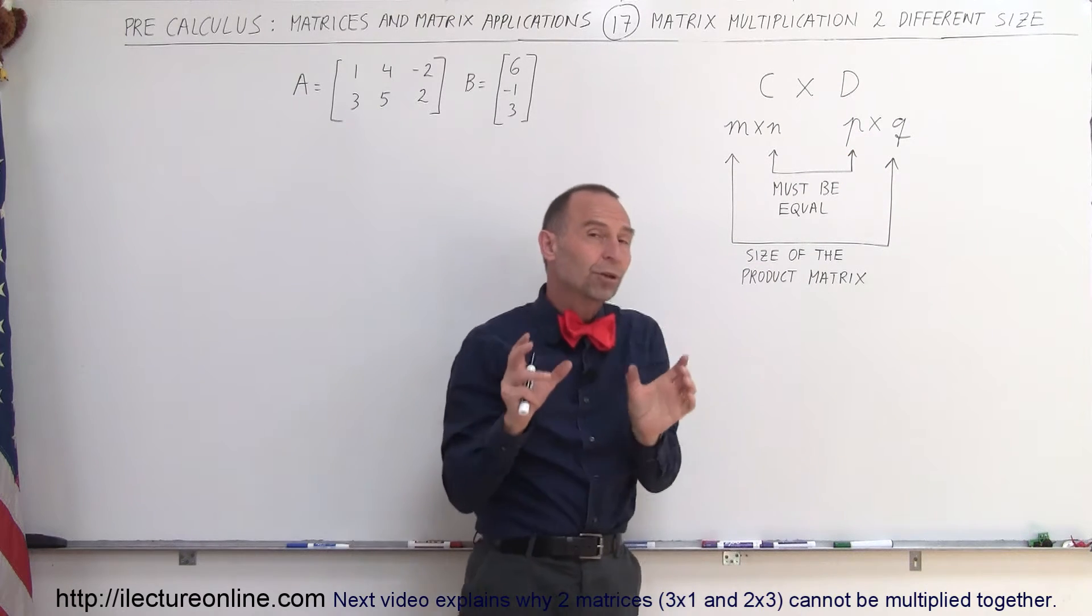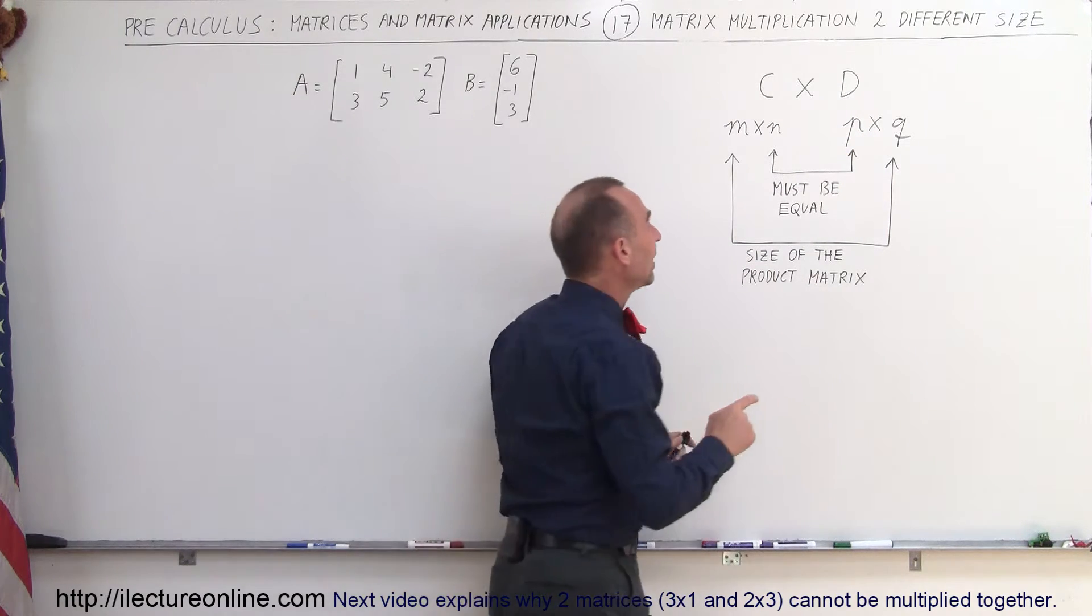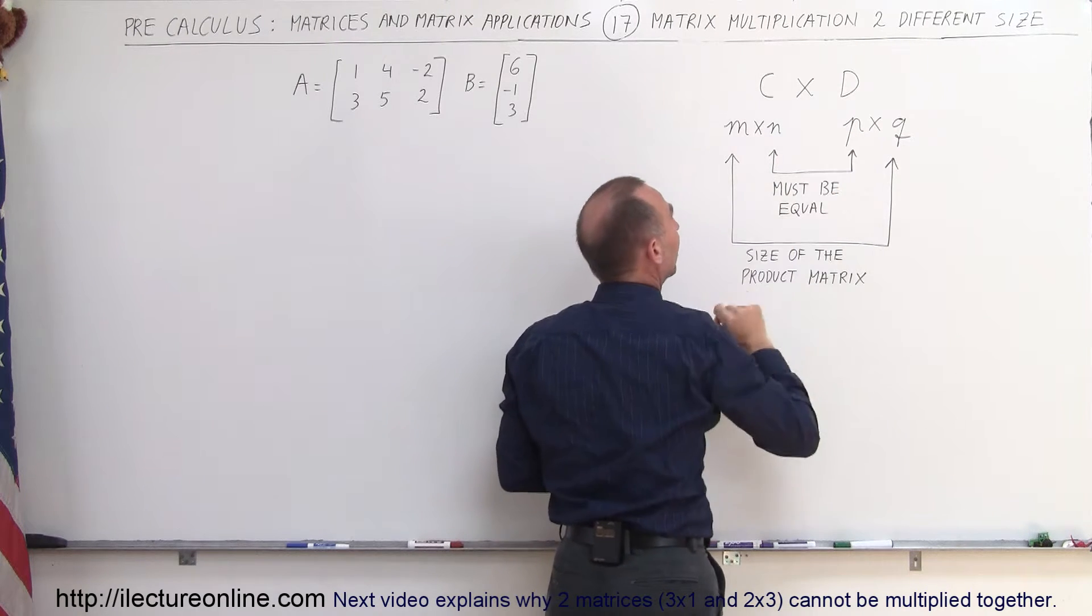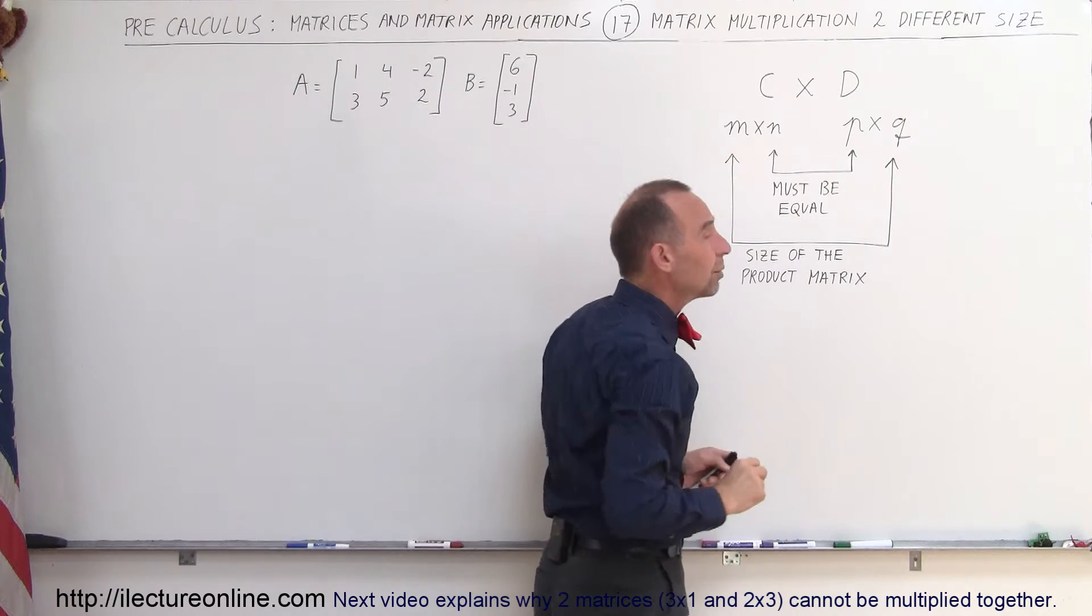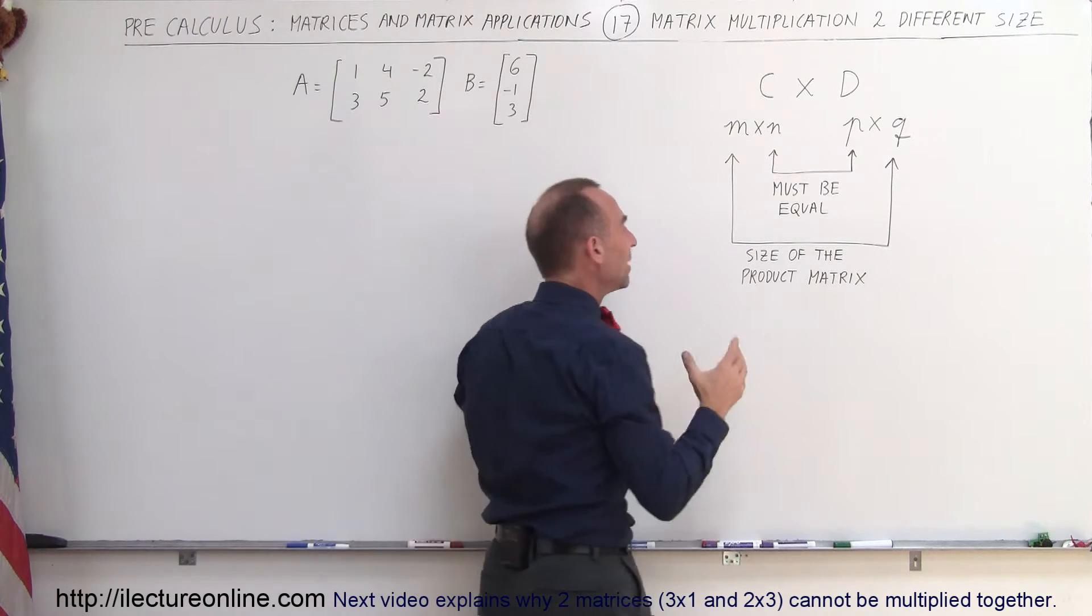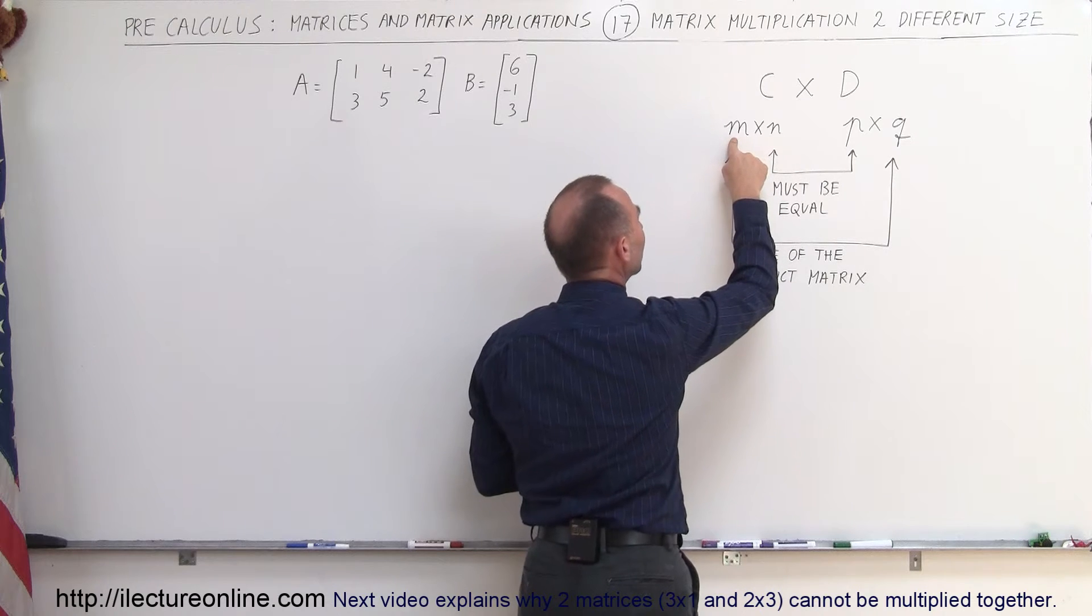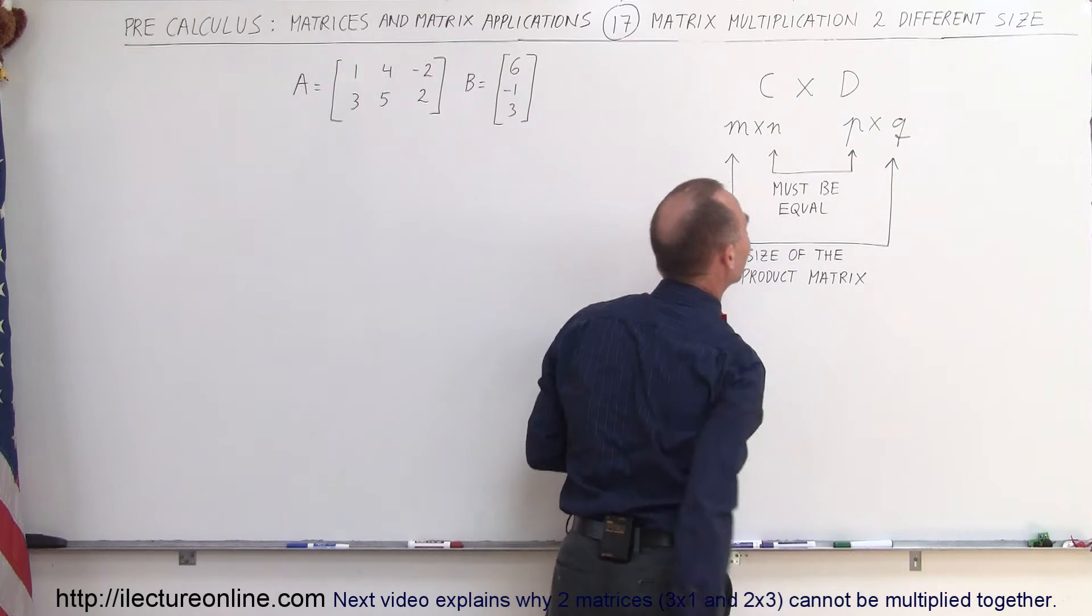And the only way that you can multiply two matrices together is that the number of columns of the first matrix equals the number of rows of the second matrix. Those two numbers must be equal. And the resulting size of the product, the matrix of that product, will be equal to the number of rows of the first matrix times the number of columns of the second matrix.